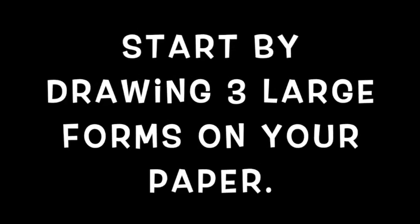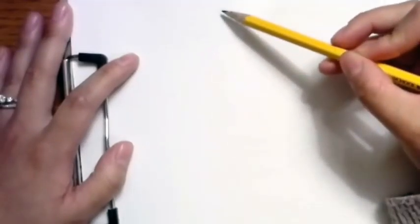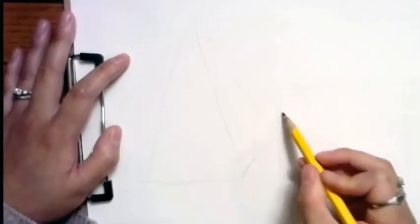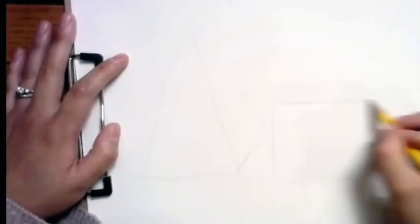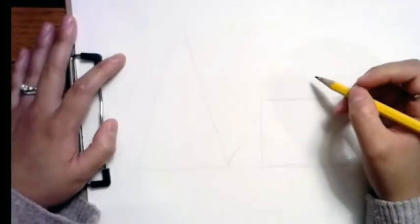Start by drawing three large forms on your paper. You can pick any geometric forms you want to draw. Sketch them out in pencil first, and then outline them in marker.